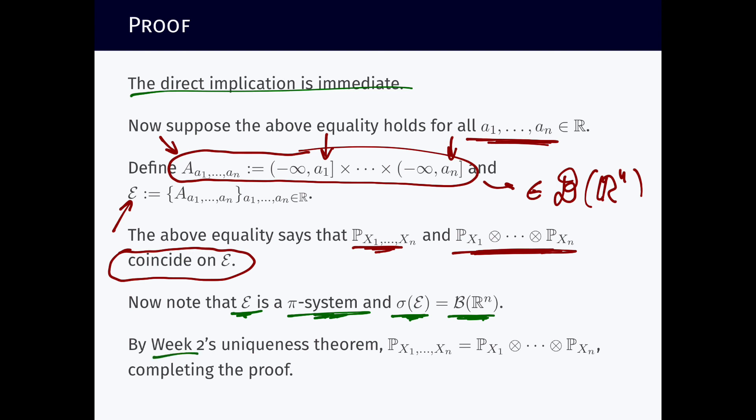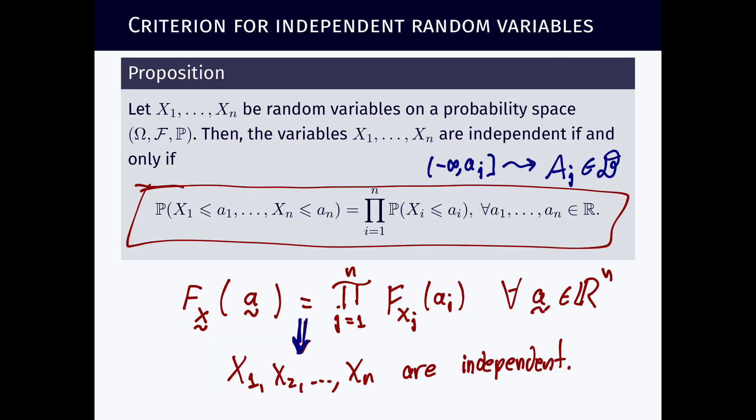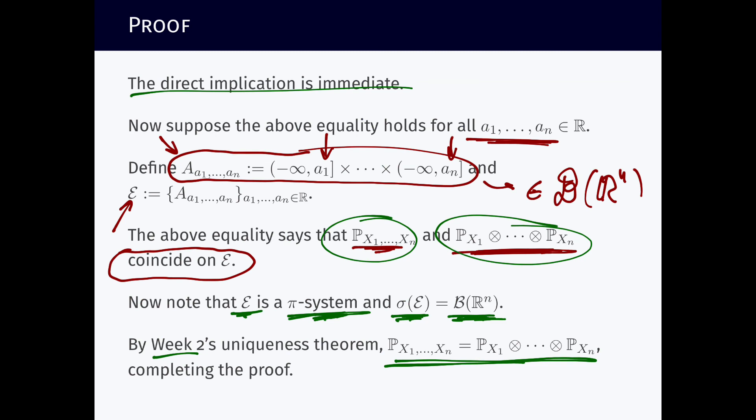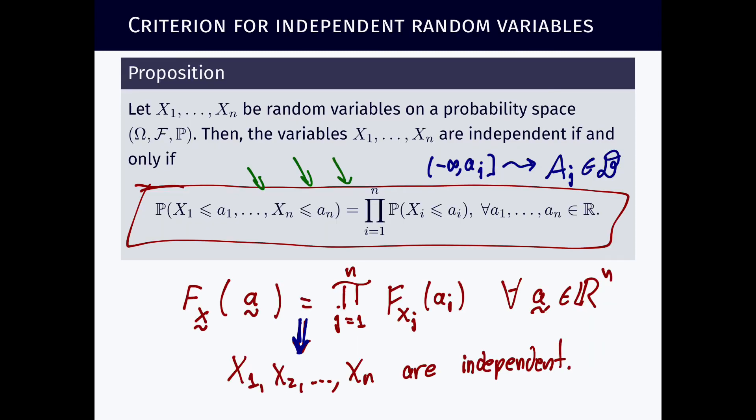So since these two measures coincide on this pi system, and this pi system generates the whole sigma algebra, we can conclude that they are the same, which means we can conclude exactly what is being said in this proposition. This concludes the proof of the proposition. This concludes this video lecture. And this also ends this rather long unit.